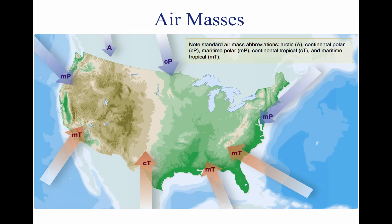As shown above, a continental polar air mass forms over a polar region and brings cool, dry air with it. Maritime tropical air masses form over warm tropical waters like the Caribbean Sea and bring warm, moist air.